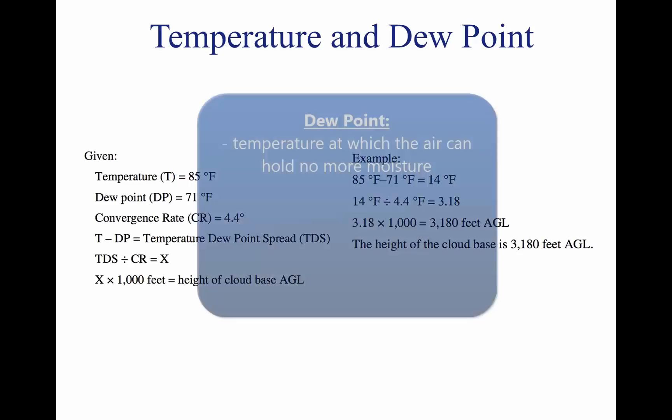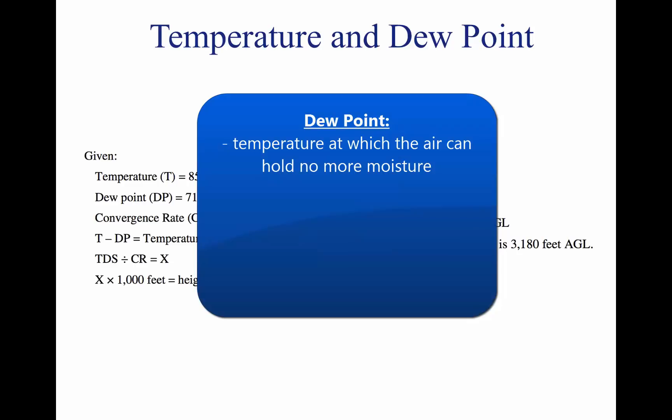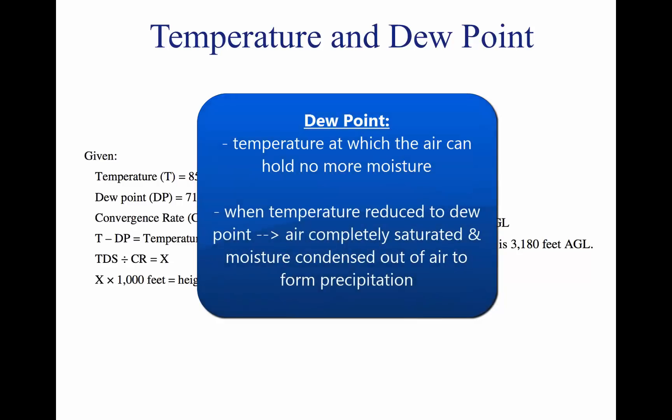The relationship between dew point and temperature defines the concept of relative humidity. The dew point, given in degrees, is the temperature at which the air can hold no more moisture. When the temperature of the air is reduced to the dew point, the air is completely saturated, and moisture begins to condense out of the air in the form of fog, dew, frost, clouds, rain, hail, or snow.